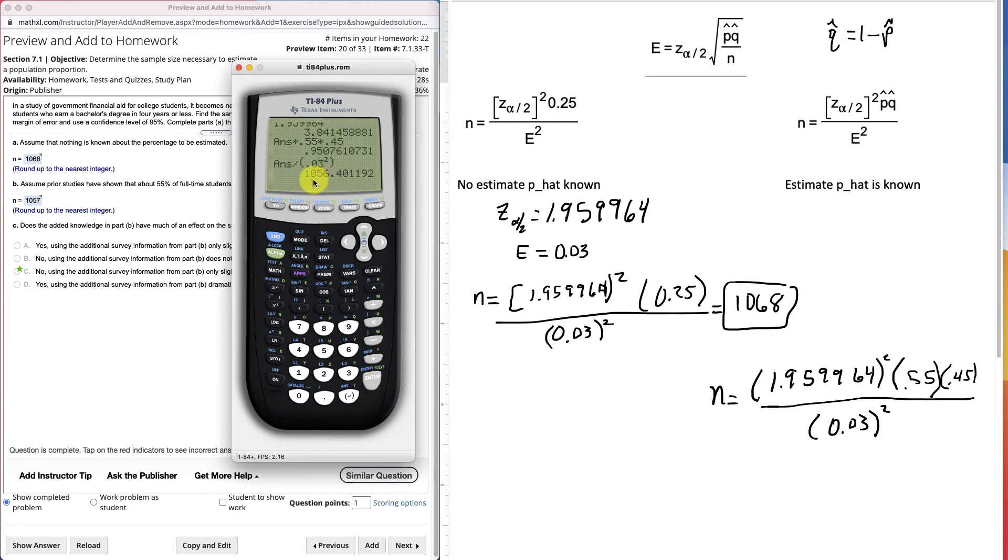And we see we have 1,056.4. Again, we round up. So we have 1,057. So this one would be 1,057. And that's what we see there.